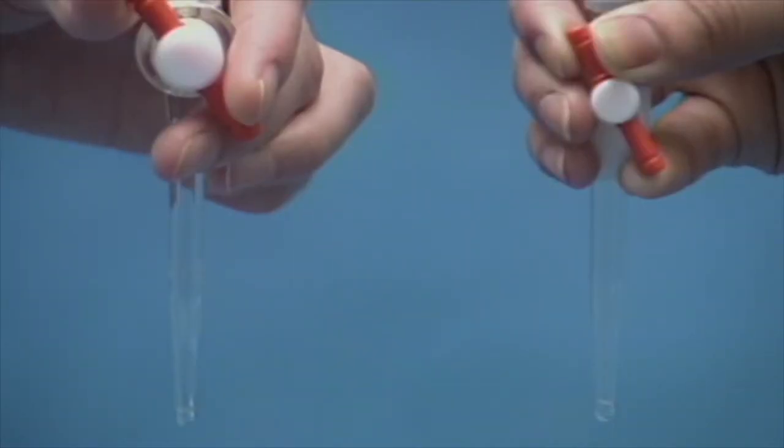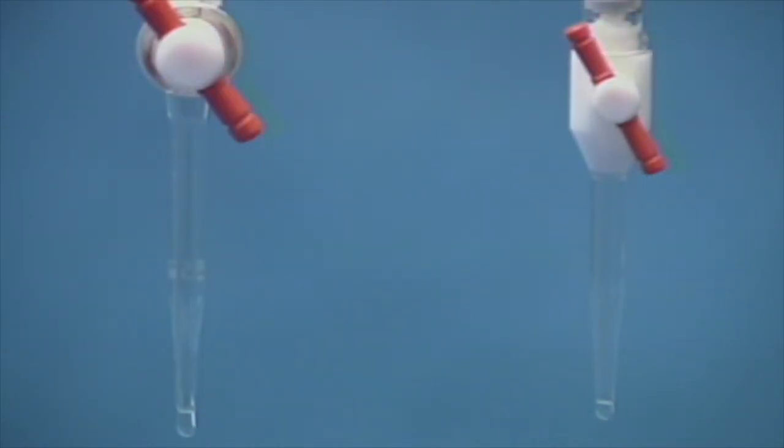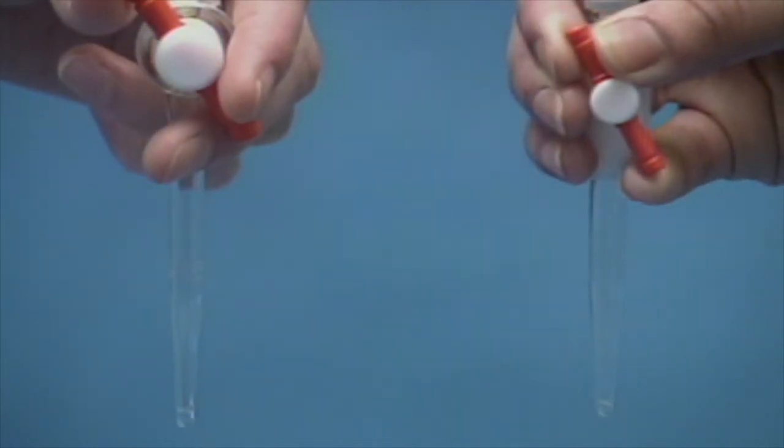By opening the stopcock the slightest amount, we allow drops to fall slowly. The flow rate of drops requires extremely fine adjustment. The drops fall more quickly as the stopcock is turned closer to vertical.